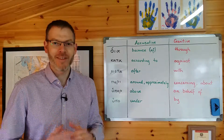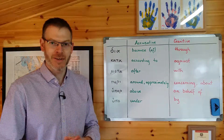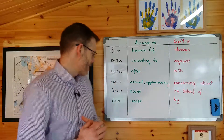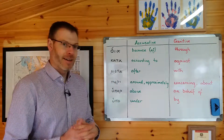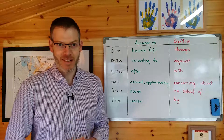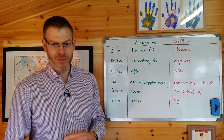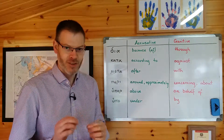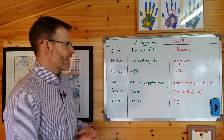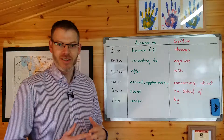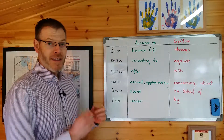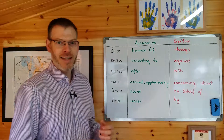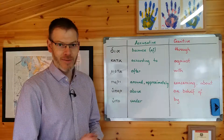Today I'm going to give you a completely fail-safe way to remember these six prepositions: dia, kata, meta, peri, huper, and hupo. This is in Jeremy Duff's Elements of New Testament Greek, section 4.2.3. The tricky thing is that not only have you got six prepositions to learn, but each of them can govern a noun in either of two cases — the accusative or the genitive case.